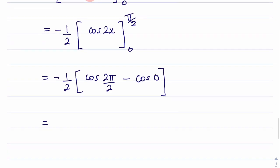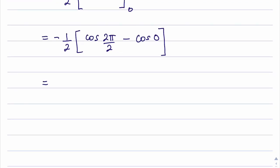I can simplify this further because the 2 here will cancel with this one. So I've got negative 1/2, cosine of π minus cosine of 0.